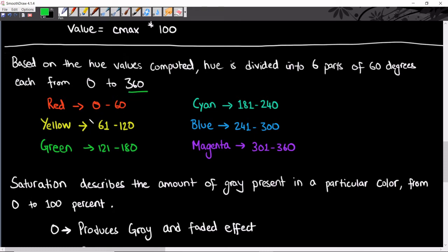Based on the computed hue values, hue is divided into 6 parts, each of 60 degrees, from 0 to 360. If your hue lies between 0 and 60, it's red. Between 61 and 120 it's yellow, 121 to 180 it's green, and similarly cyan, blue, and magenta each have 60-value ranges.